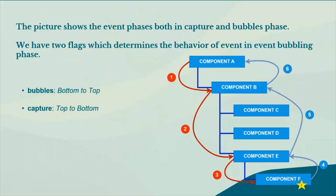The picture shown here illustrates both the capture and bubble phases. We have two flags which determine the behavior of an event. In the bubble phase, events flow from bottom to top, and in the capture phase, from top to bottom.